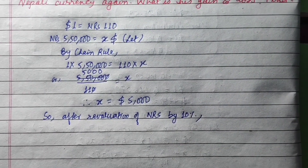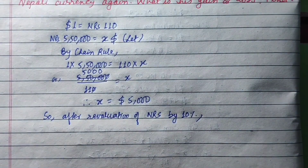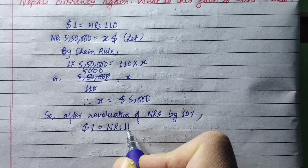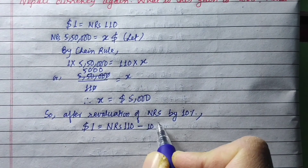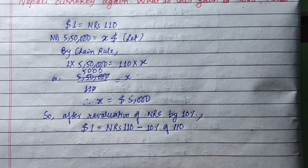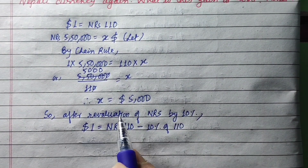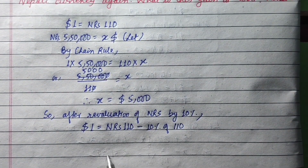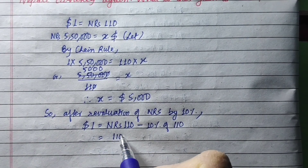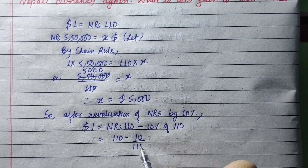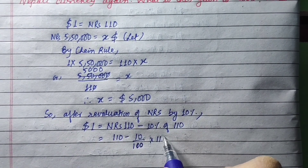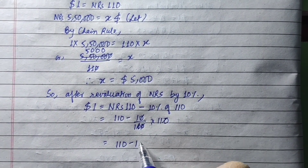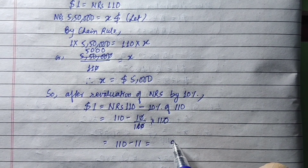Now, after revaluation of NRS by 10%, the new rate becomes: 110 minus 10/100 into 110, which equals 110 minus 11 = 99. So 1 dollar is now equal to NRS 99.